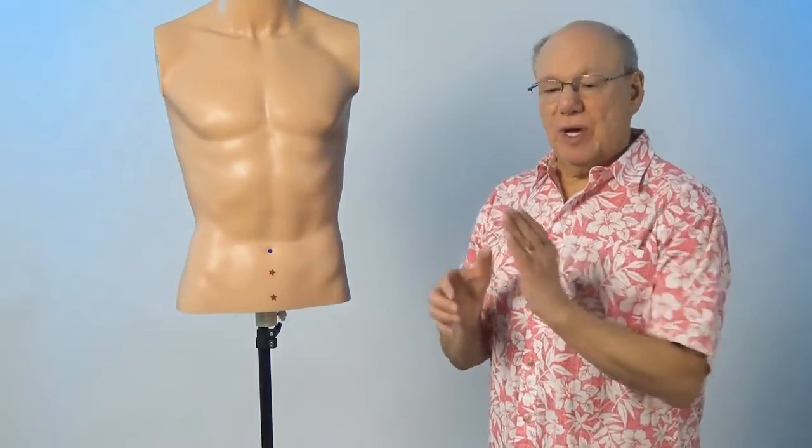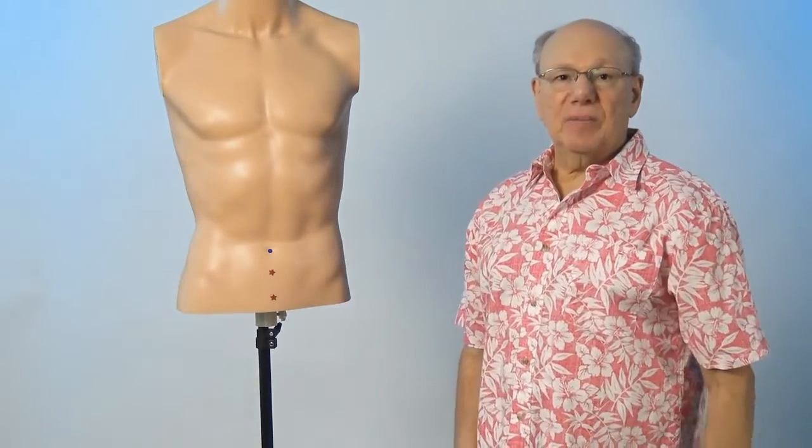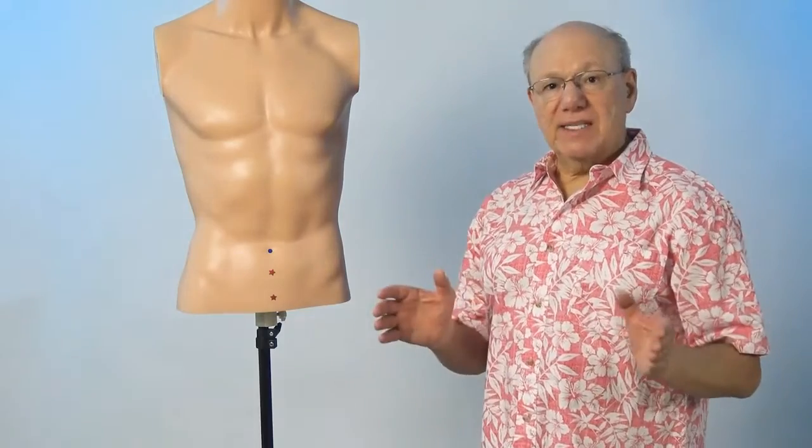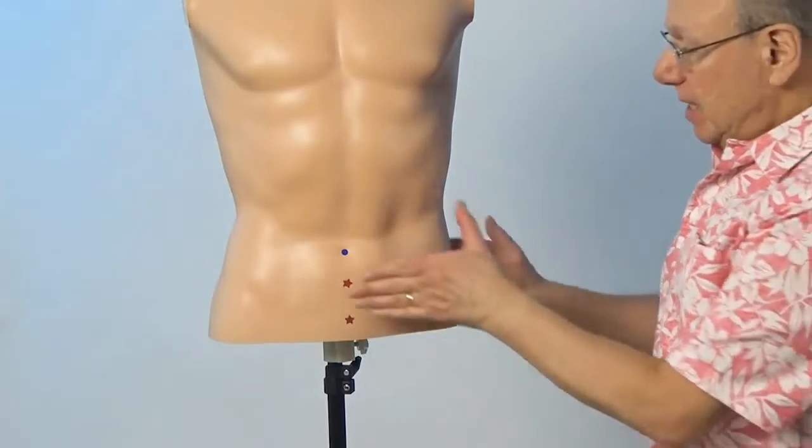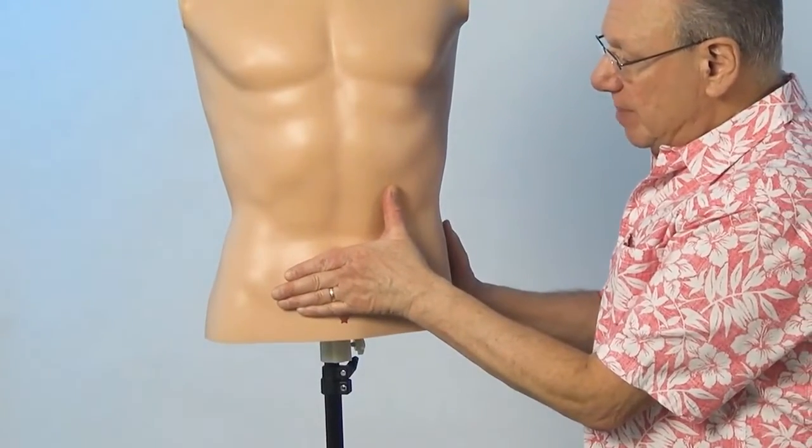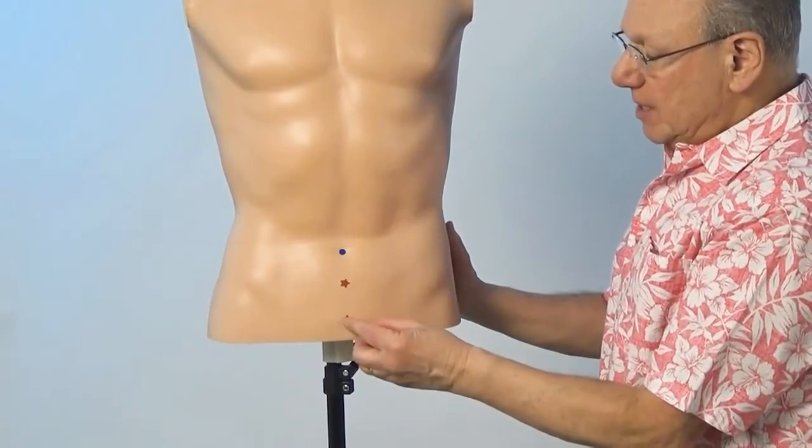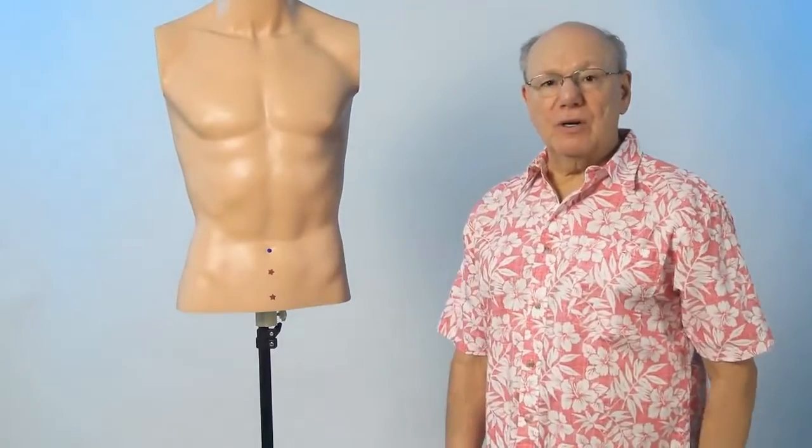Conception Vessel 3 is located the width of one hand below your belly button. To find Conception Vessel 3, put your hand just under your belly button and find the point that is just below your small finger.